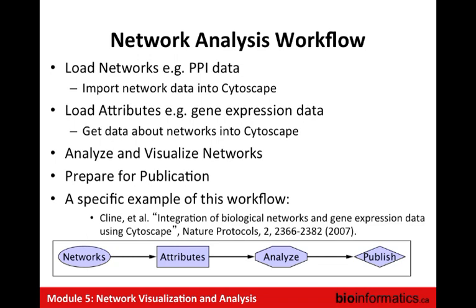A typical network analysis workflow includes: first, getting some network information from somewhere. You got network information yesterday from Reactome FI — you can load in your list of genes or mutations and pull down a network. That's one type of network information, and there are lots of sources for this. The second thing you do is load some information about the networks — genes and interactions have information associated with them, which could be expression data or mutation data. Then you analyze and visualize networks. I'll be talking mostly about visualization this morning, and some analysis.